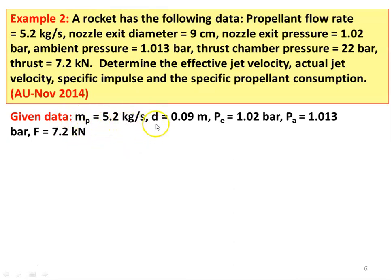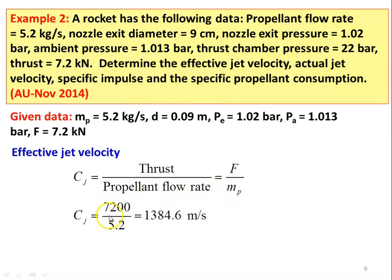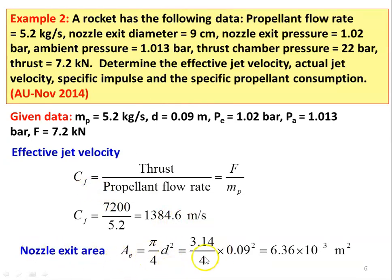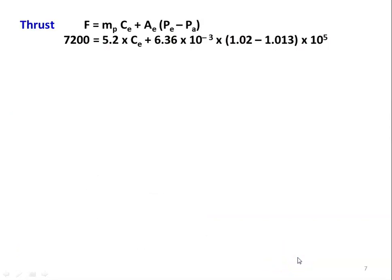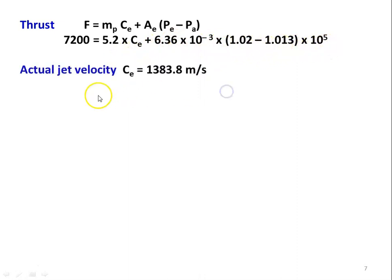Given data: MP = 5.2 kg/s, D = 0.09 m, exit pressure 1.02 bar, ambient pressure 1.013 bar, F = 7.2 kilo Newton. Effective jet velocity Cj = 7200 / 5.2 = 1384.6 m/s. Nozzle exit area Ae = π/4 × 0.09² = 6.36 × 10⁻³ m². Thrust: 7200 = 5.2 × Ce + 6.36×10⁻³ × (1.02 − 1.013) × 10⁵. Solving, actual jet velocity Ce = 1383.8 m/s.